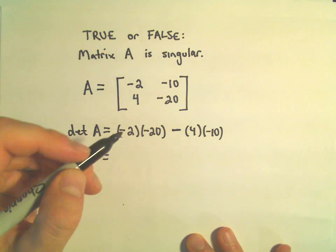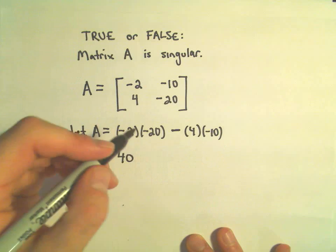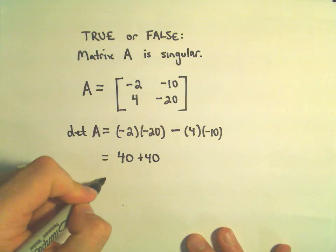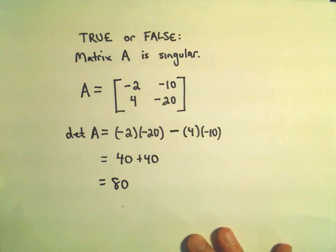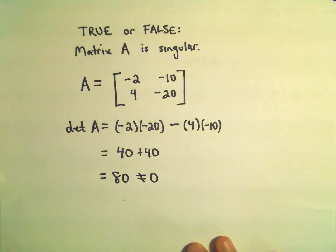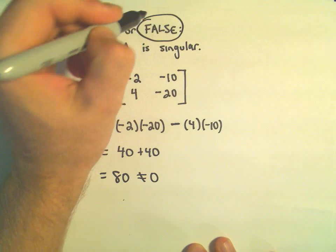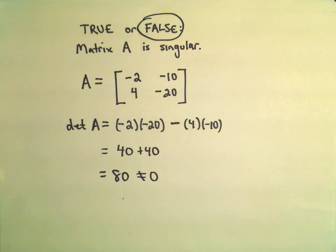Well, negative 2 times negative 20 is positive 40. It looks like we have a negative 4 and a negative 10, which will be another positive 40. So, since we're getting 80 for the determinant, and 80 is certainly not equal to 0, this matrix is not singular. So, by saying it's singular, we would say that's a false statement. Definitely not singular.